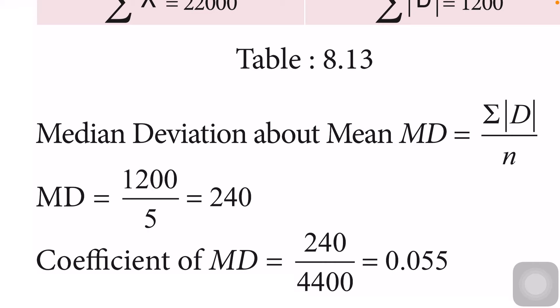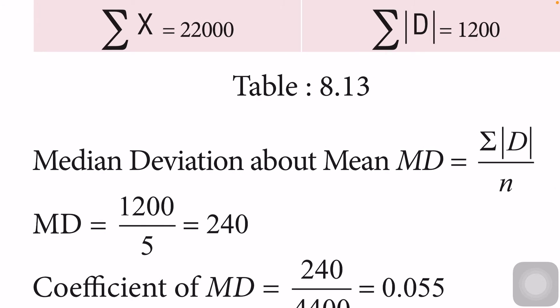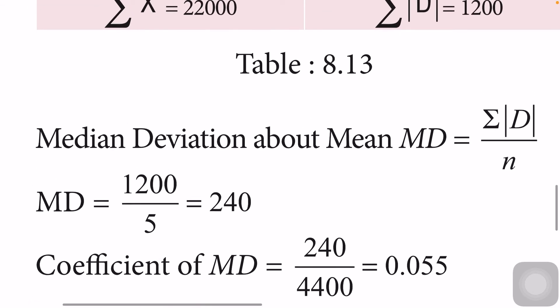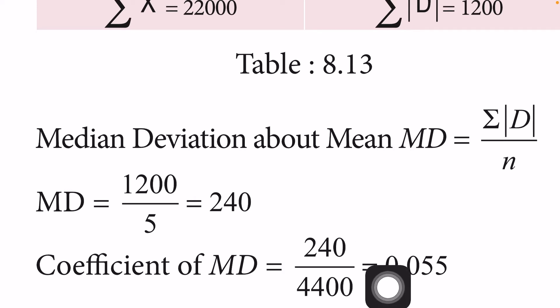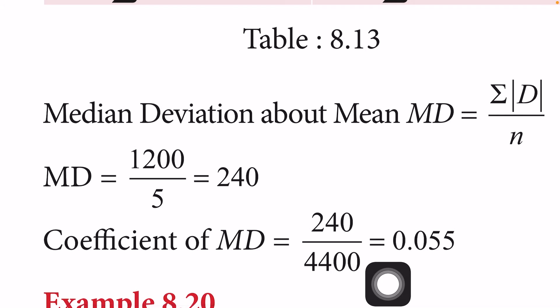Mean deviation about mean equals sigma modulus D divided by n. Sigma modulus D is 1,200, divided by n equals 5, giving 240. Now we calculate the relative measure: the coefficient of mean deviation equals mean deviation about mean divided by mean, which is 240 divided by 4,400, giving 0.055.